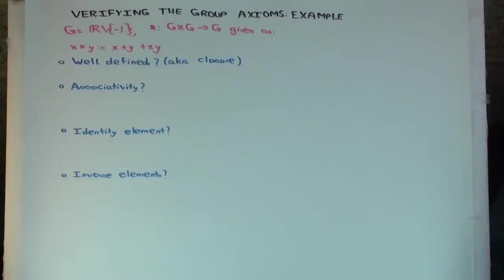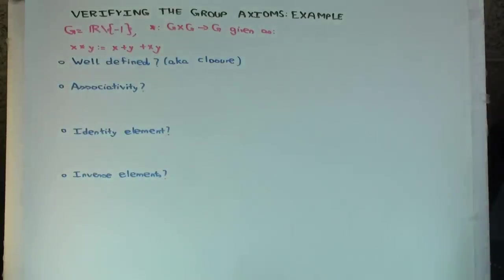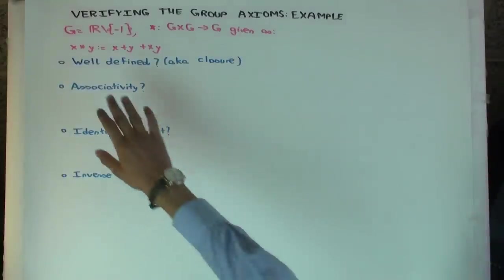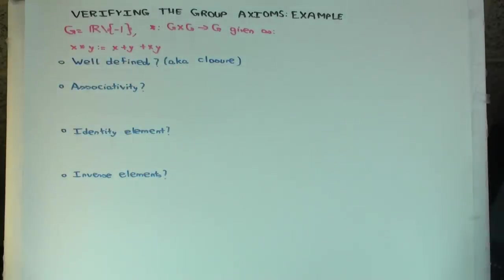So in this talk, I'm going to give an example of something which I'll try to prove is a group. So the set is all reals except negative 1. And the binary operation sends two real numbers x and y to x plus y plus xy, where this plus is just usual addition of real numbers and the xy is just usual multiplication. That's why I'm using star for the group operation, so it doesn't confuse with the usual addition and multiplication.